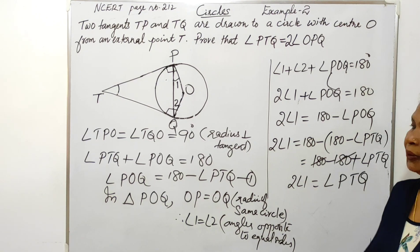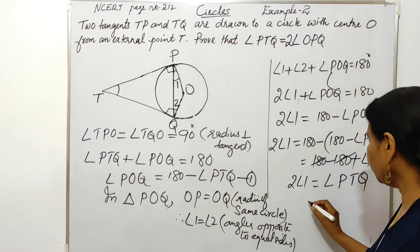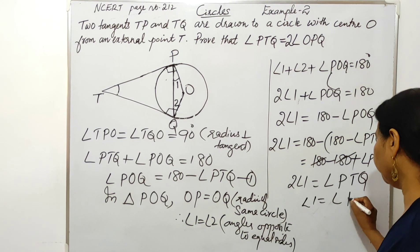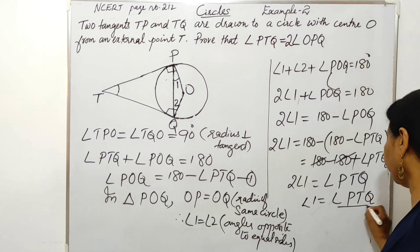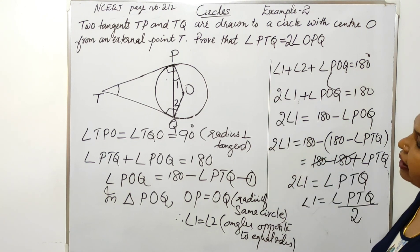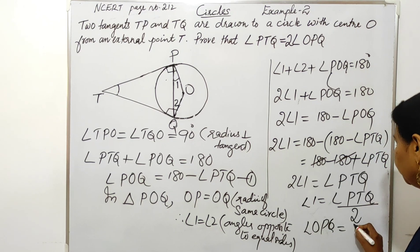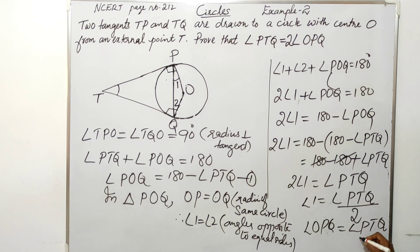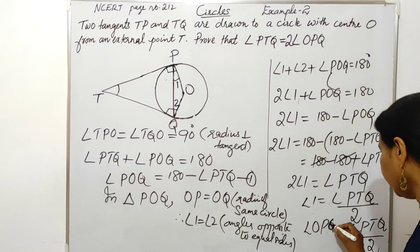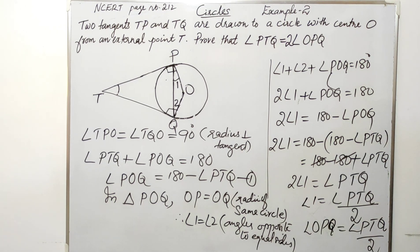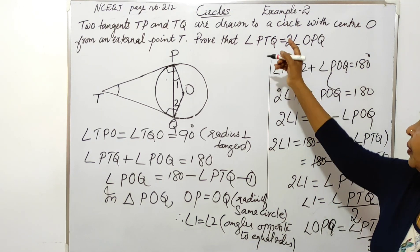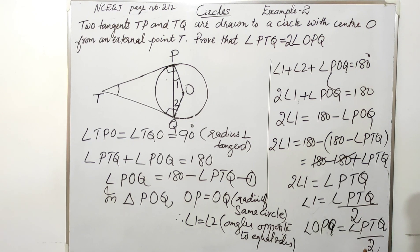So, angle 1 is equal to angle PTQ divided by 2. Angle 1 is angle OPQ. So, angle OPQ equal to angle PTQ divided by 2. That is, OPQ is equal to half of PTQ. Or, angle PTQ is equal to 2 angle OPQ.